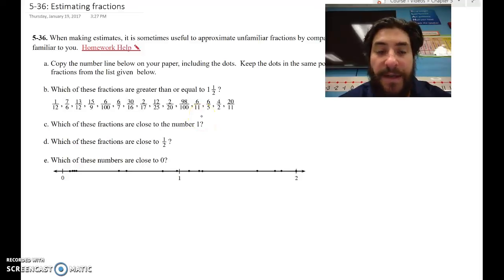Let's do that after we do part B, C, D, and E. So we will label these, but let's get the numbers that are greater than or equal to 1 1/2, the ones that are close to 1, the fractions that are close to 1/2, and which ones are close to 0. So let's do that first.